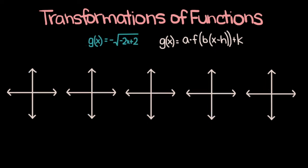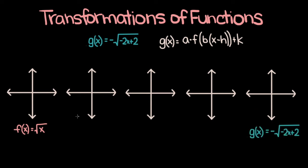Here's our second example: we have g of x is equal to negative the square root of negative 2x plus 2. Right off the bat, we can see that g of x is a square root function, and so its parent function, which we can call f of x, is going to be the square root of x. A series of transformations have been applied to turn f of x into g of x, and we'll walk through each of those steps. First off, let's just graph what f of x looks like — the square root function looks like this.